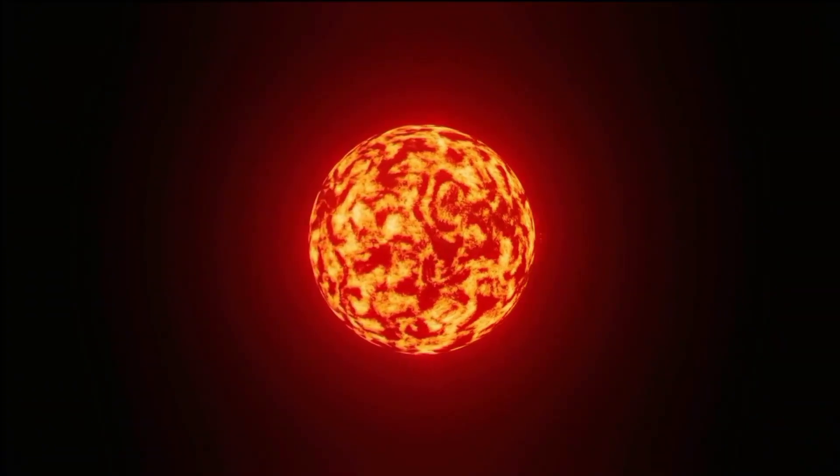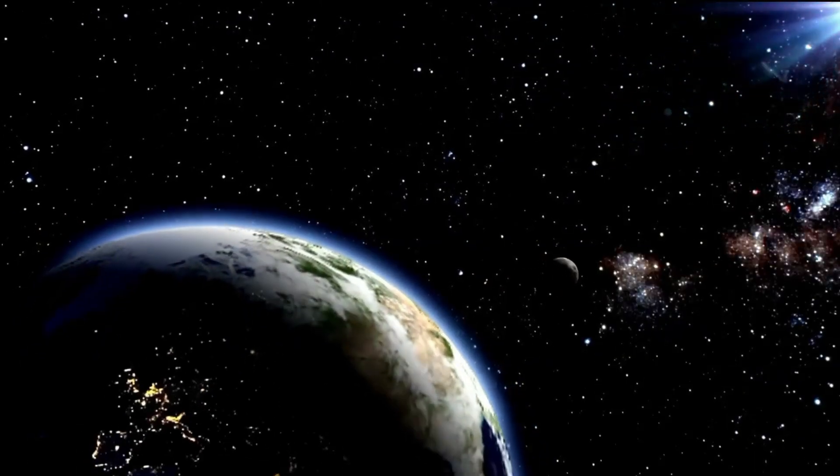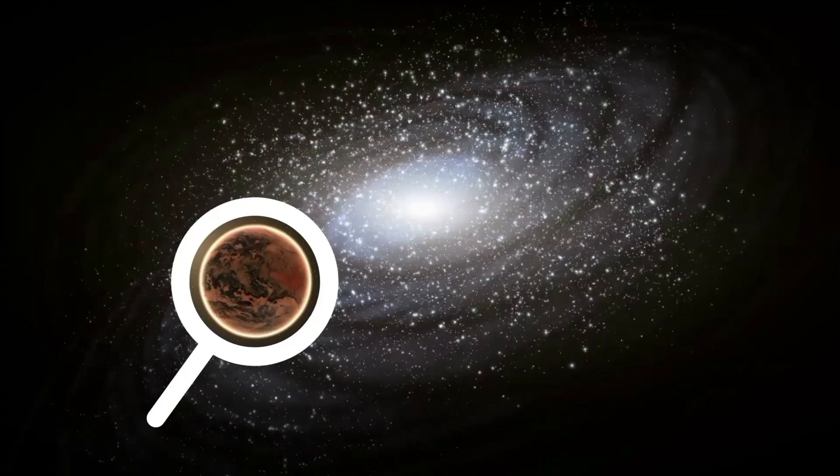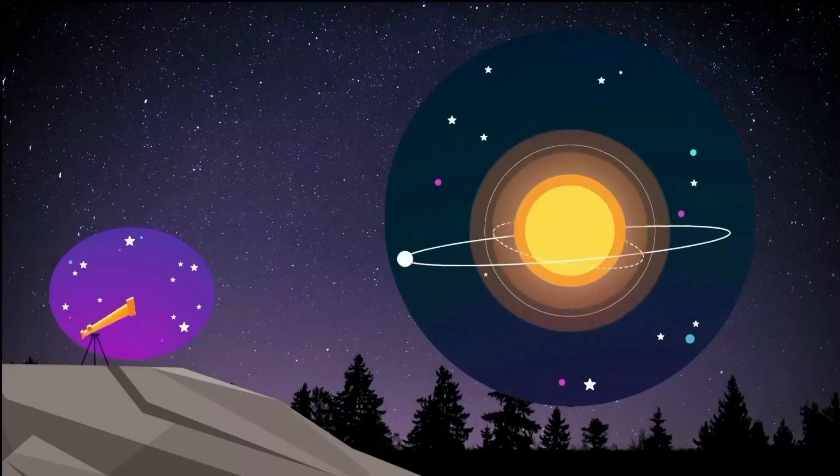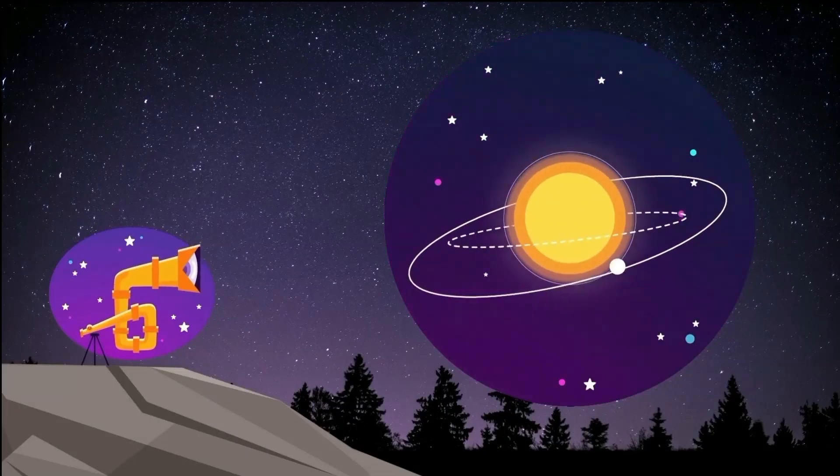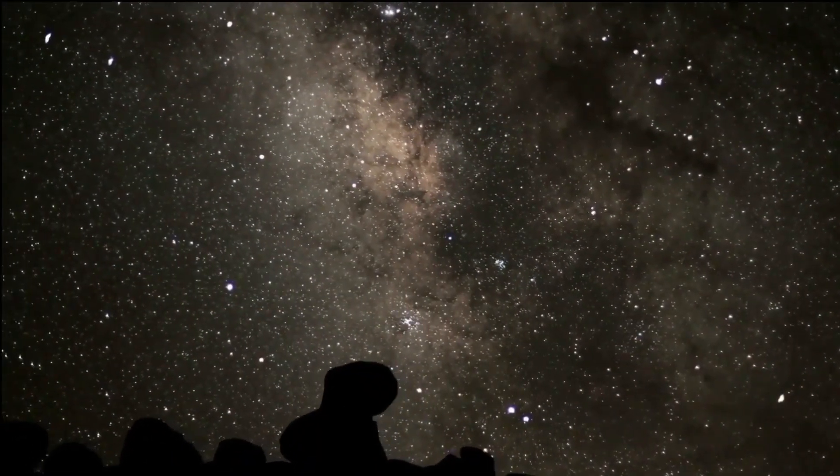Exoplanets are worlds that circle other stars, and astronomers have found evidence of two such worlds orbiting our nearest stellar neighbor, which is only 4.2 light-years away. On February 10, 2022, they discovered the third planet in the neighborhood. The Proxima neighborhood is starting to seem a little on the crowded side.